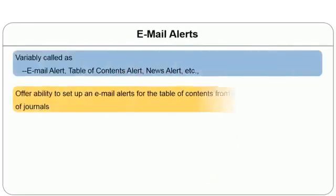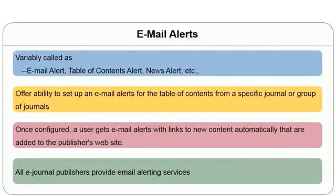Email alerts are also called table of content alerts, news alerts, etc. If a journal publisher provides an alerting service, when a new article is published in a respective domain, an email goes to the respective user. Once configured, the user will automatically receive these kinds of alerts.